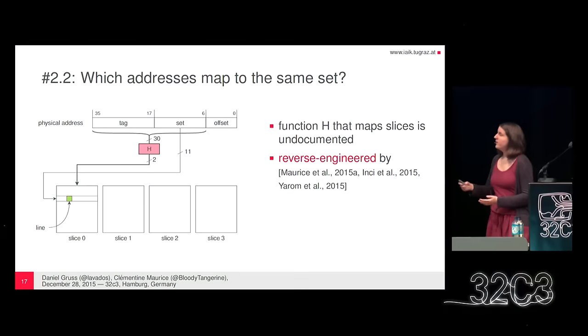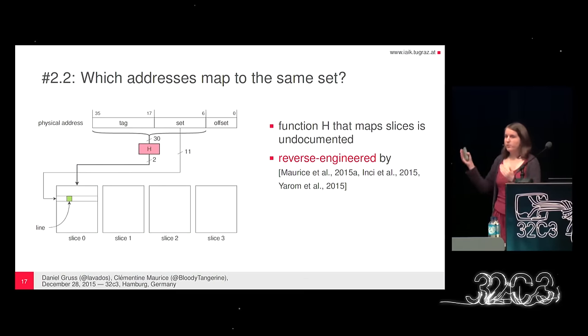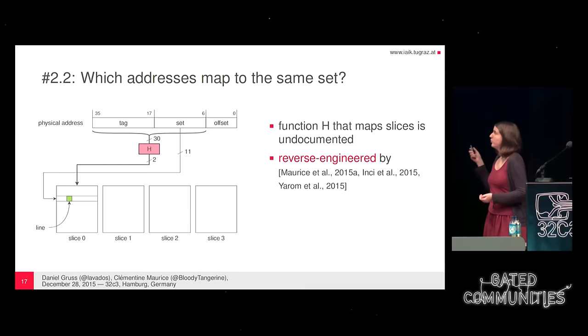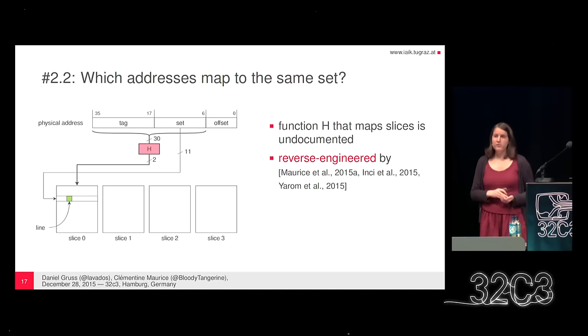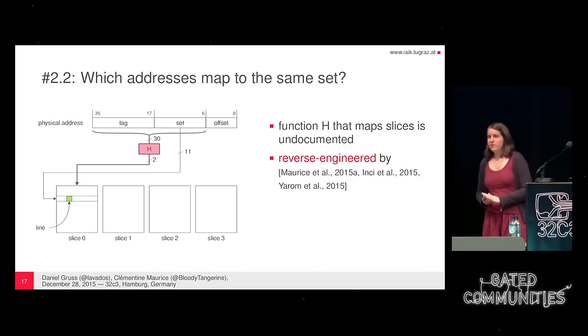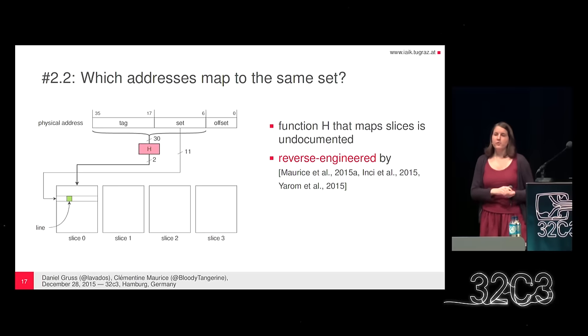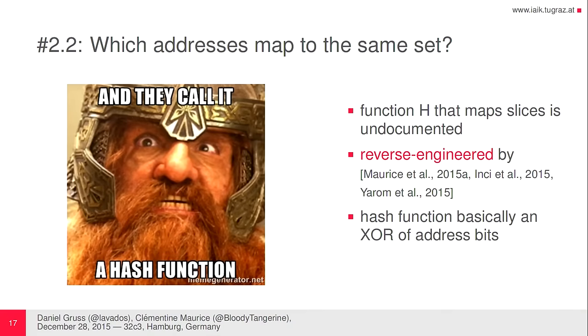It's actually not that easy. We need to know precisely where addresses are mapped in the cache, including which slice in the last-level cache. Intel processors use an undocumented hash function that maps physical addresses into slices. Fortunately, just before arriving in Graz, I succeeded in reverse-engineering this function — and there were also other teams working on it. The details are in these papers. Fun fact: this hash function is basically an XOR of address bits — and yes, they call it a hash function.